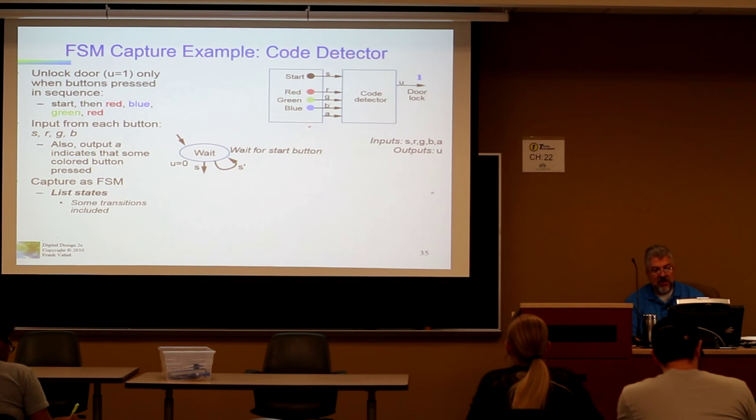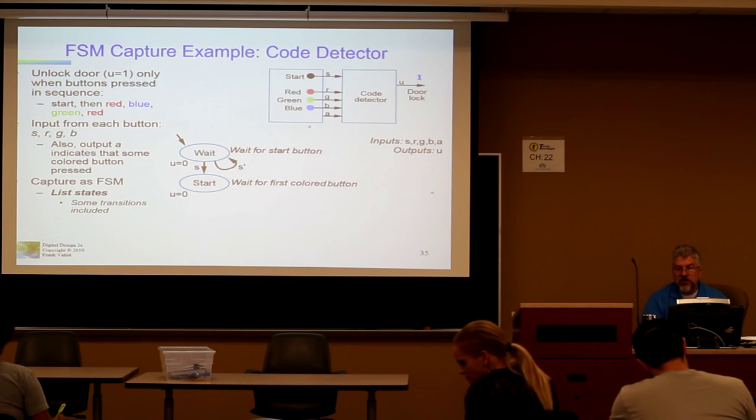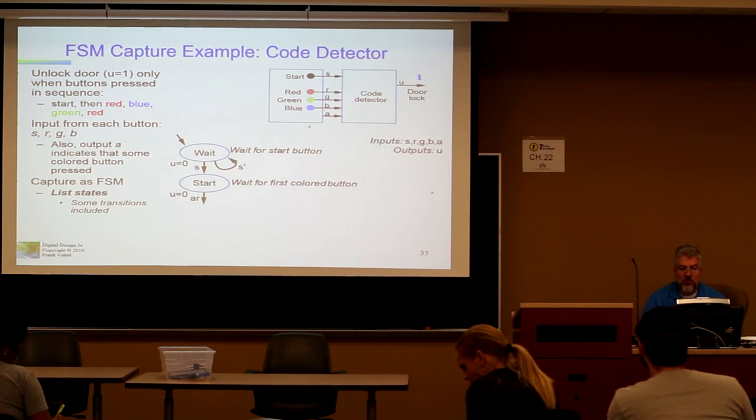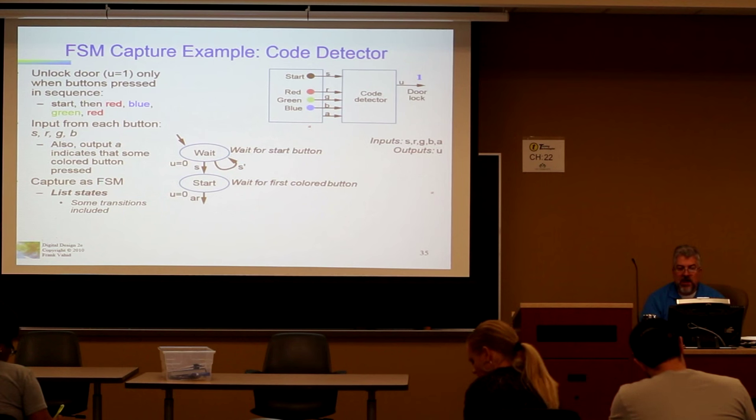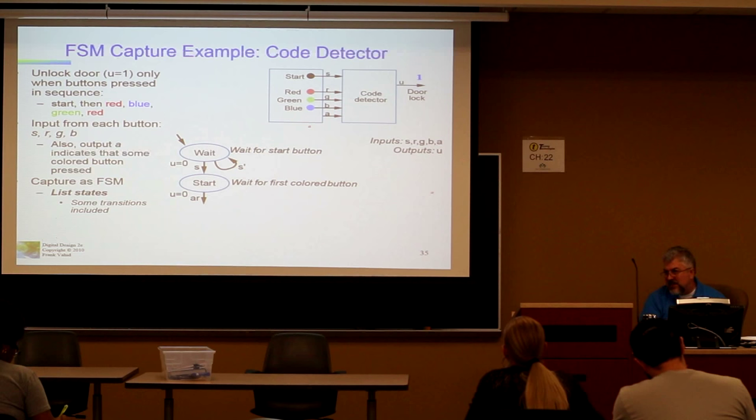So S is pressed and the rising edge of the clock occurs. We'll have us go from the wait state to the start. In other words, we're going to wait for the colored buttons. So the correct way to go through, and by the way, our output is going to be zero until you've gone through all the correct buttons. So the first thing you want to do is you want to make sure that both A and R are present. So that means that the R button has been pressed, and remember A is representing that some button has been pressed, all right?